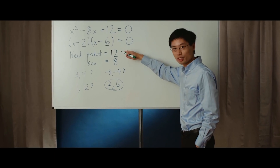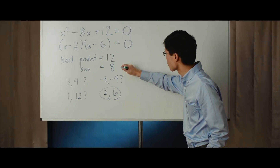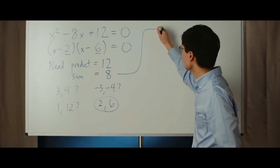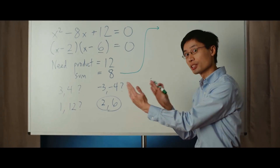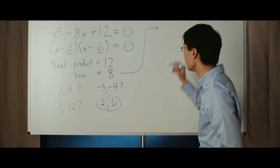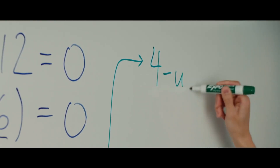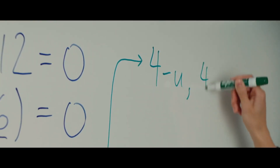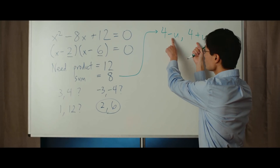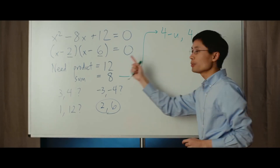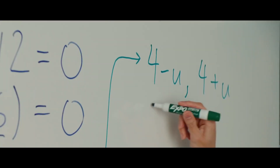Instead of starting from factoring the product, I start from the sum. If I have two numbers whose sum is 8, then they need to be the same distance away from their average. So the two numbers are 4 minus u and 4 plus u for some unknown u. These two are supposed to multiply to 12. But when you multiply this, it's beautiful — the middle terms cancel.